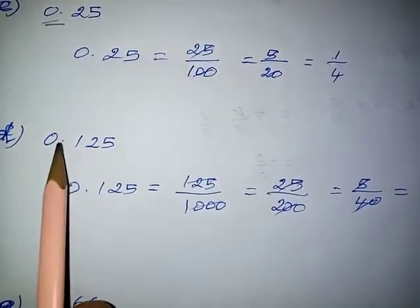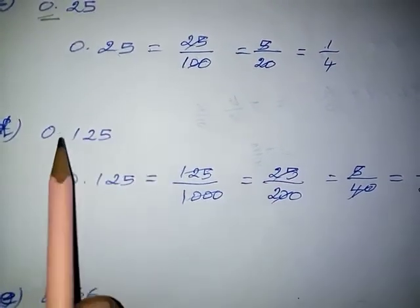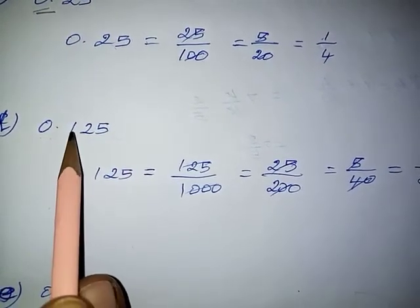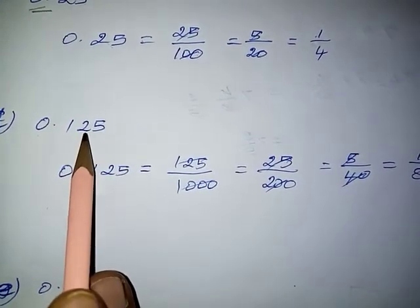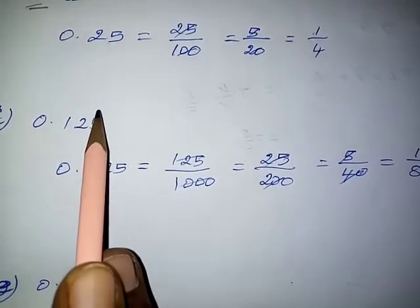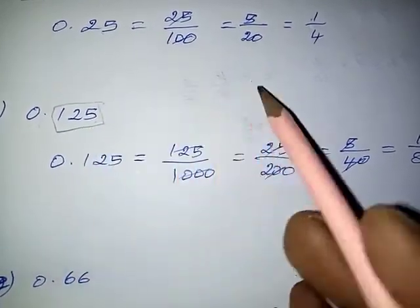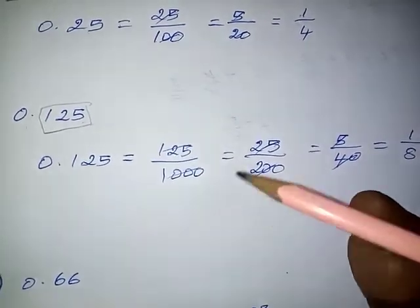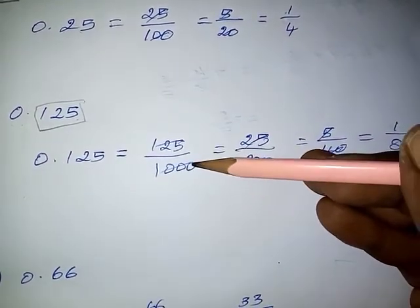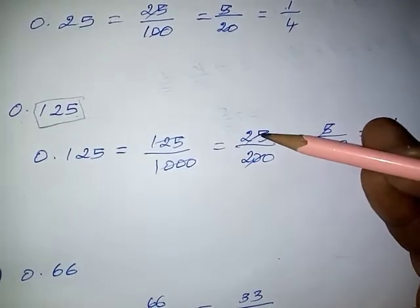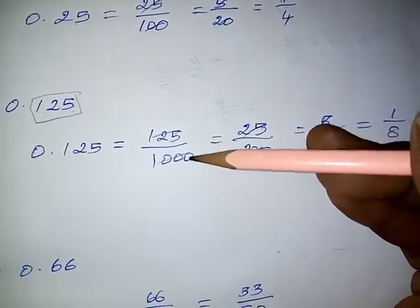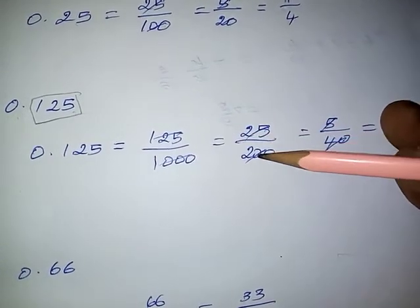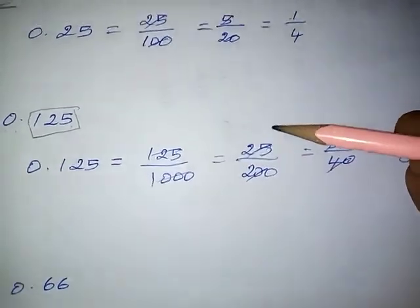Next: 0.125. Here, the integral part is 0 and the decimal part covers the 10th, 100th, and 1000th places. So we write the decimal part as a fraction: 125 by 1000. Now, 125 and 1000 can be divided by the 5 times table, because these are all multiples of 5. So: 25 fives are 125 and 200 fives are 1000.